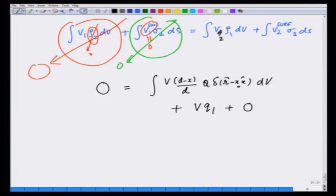I have written all terms. This equals v (d minus x) over d. X will become now x naught because of this delta function, times q, plus v q 1.